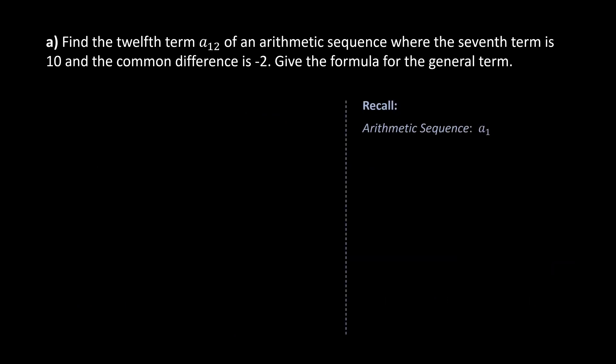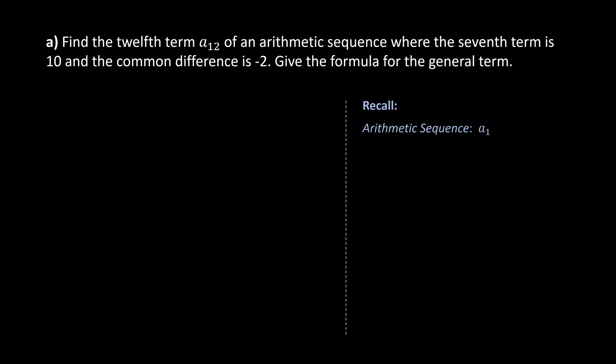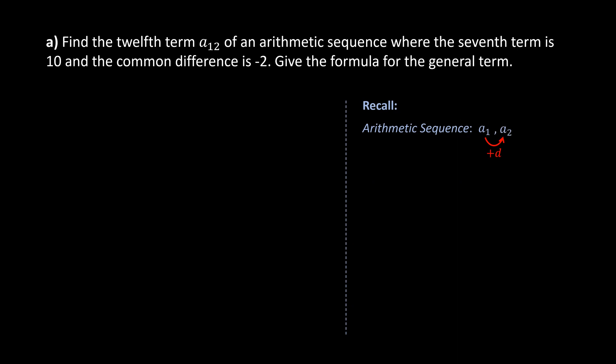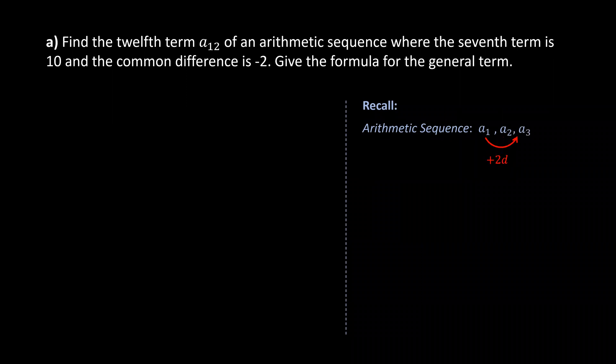Recall that for arithmetic sequences, the next term can be obtained by adding the common difference to the previous term. So in order to find a2 or the second term, we can add the common difference, which is represented by d, to the first term. And if we are to find the third term, either we add 1d to the second term or we add 2ds to the first term.